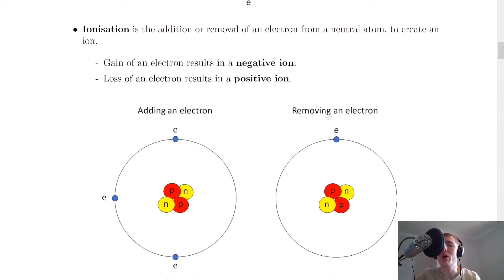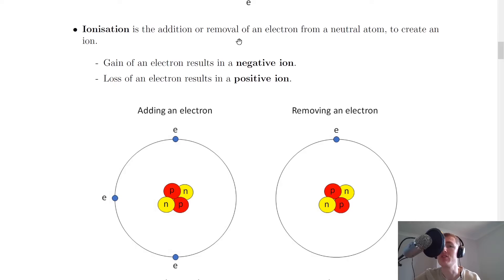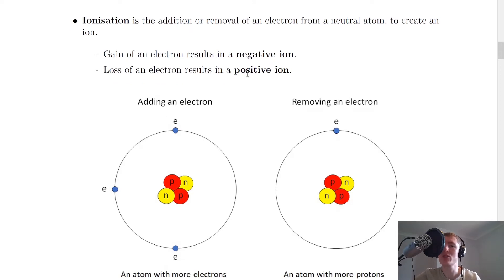What is ionization? Ionization is the addition or removal of an electron from a neutral atom to create an ion. So it's either adding an electron to a neutral atom or taking away an electron from a neutral atom, and this will leave behind something called an ion. It depends on whether you're adding or removing an electron as to whether you get a positive or a negative ion. If an atom gains an electron, this results in a negative ion. But if an atom loses an electron, this results in a positive ion.